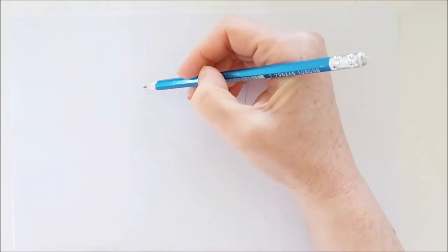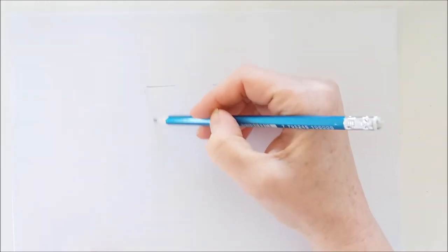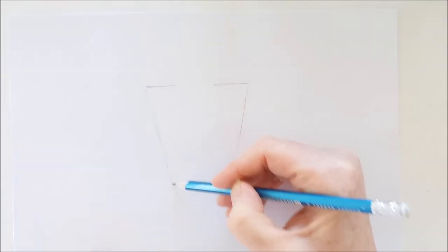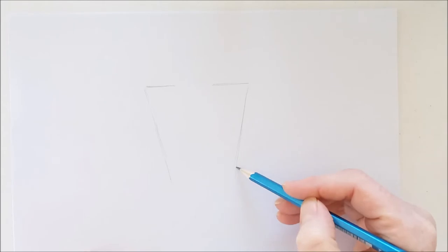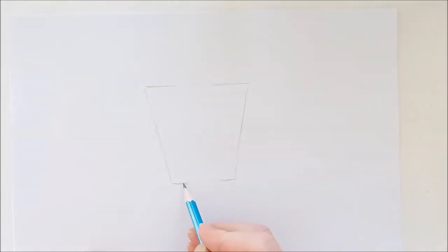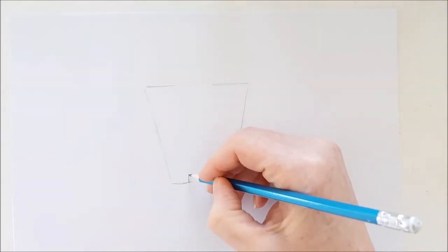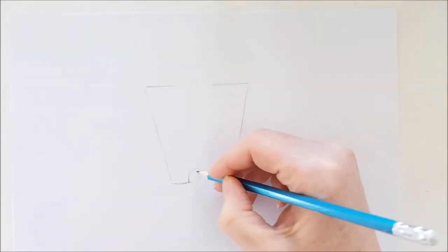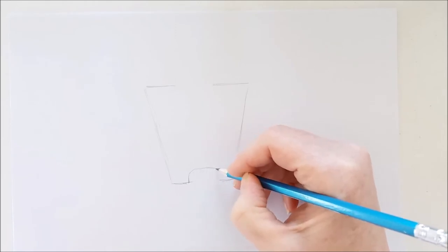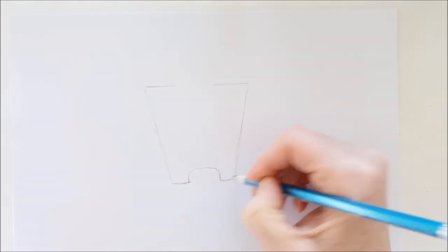At the end of each one of these lines, I'm going to draw a long line down. Both of these lines will angle in towards each other. Then I'll draw two more lines and connect these two lines with a U-shape. This is where the wheel will go.